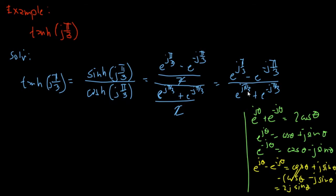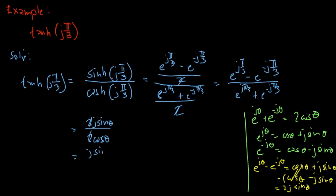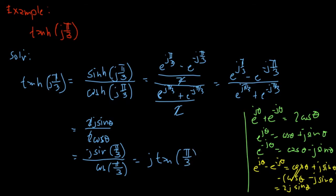So our equation simplifies to 2j·sine(θ) over 2·cosine(θ). We can cancel the 2, and substituting θ = π/3, we get j·sine(π/3) over cosine(π/3), which by trigonometric identity gives us j·tangent(π/3).